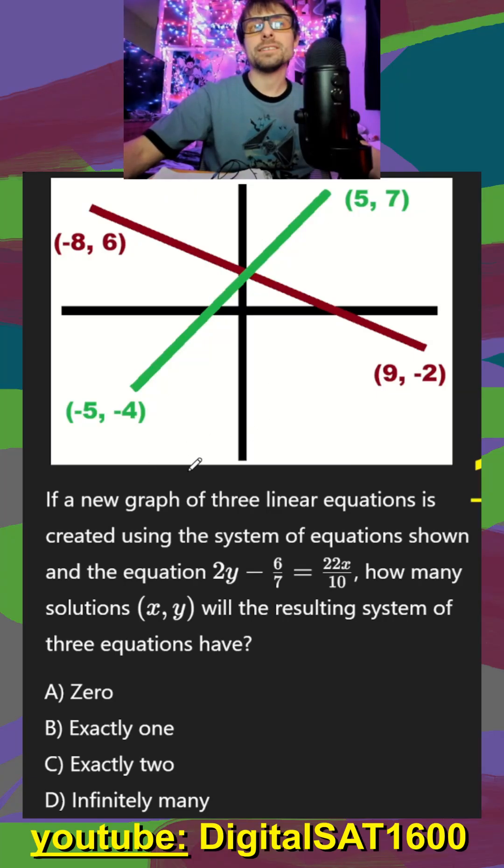I see two lines in a graph, and they say if a new graph of three linear equations is created using the system above and this new third equation, how many solutions will the resulting system of three equations have?